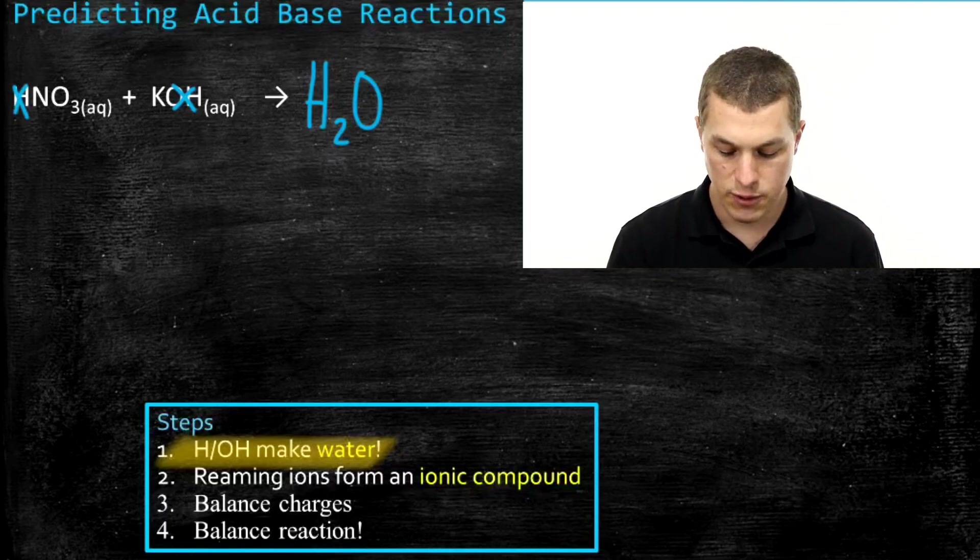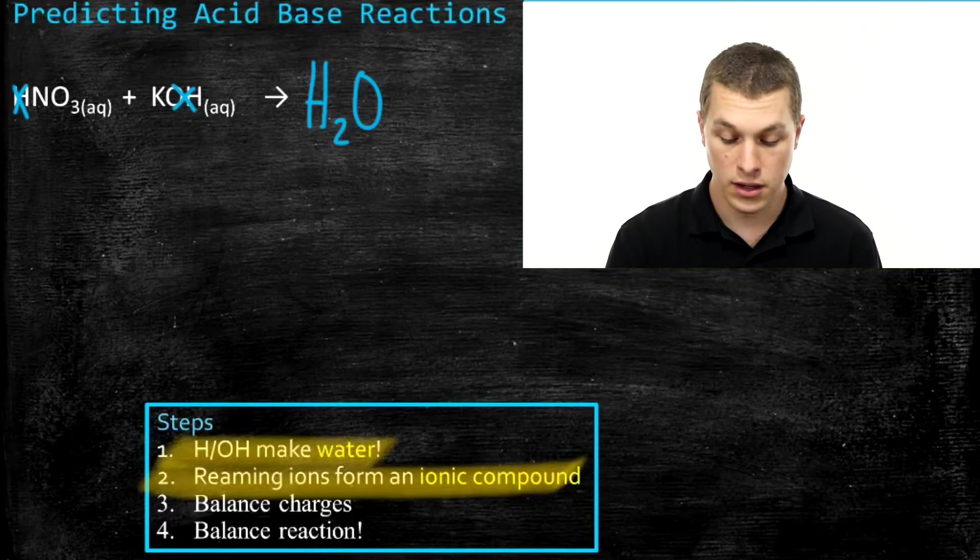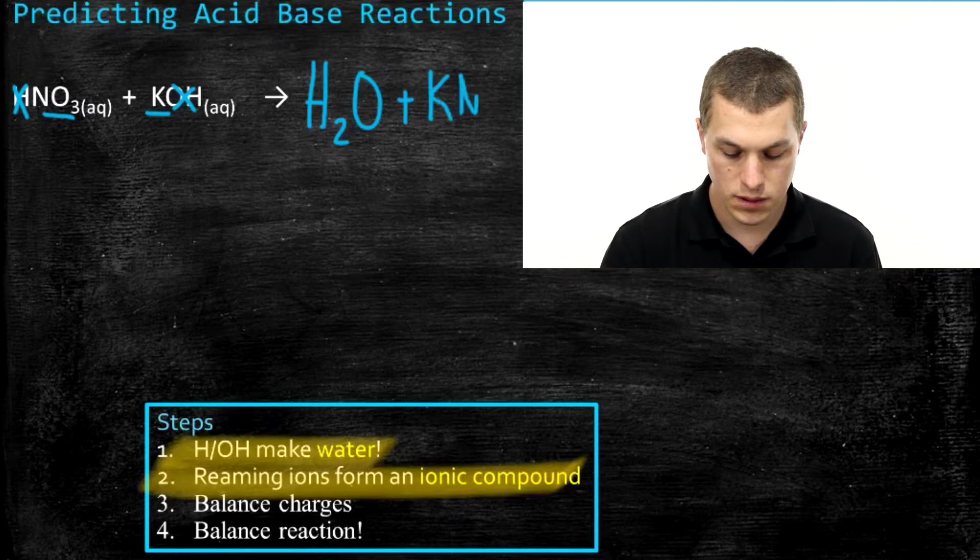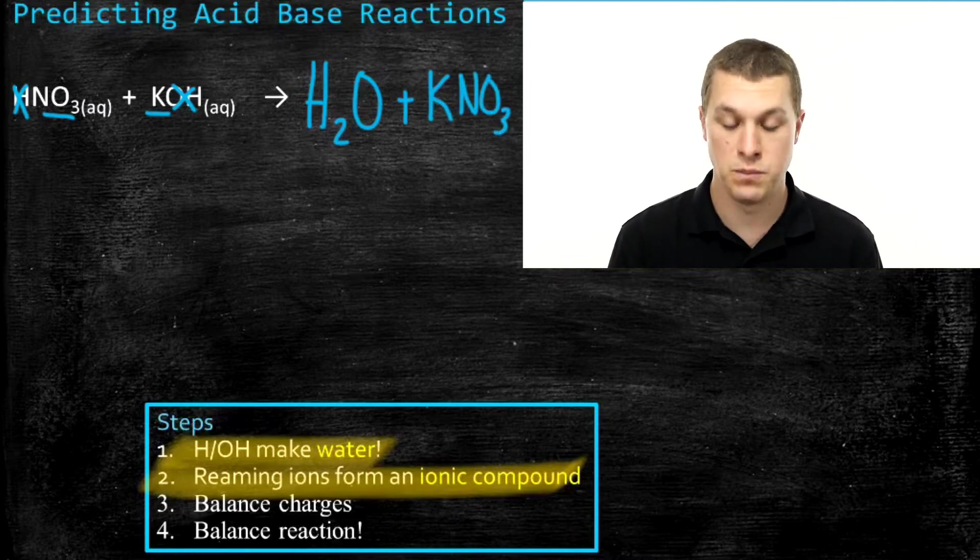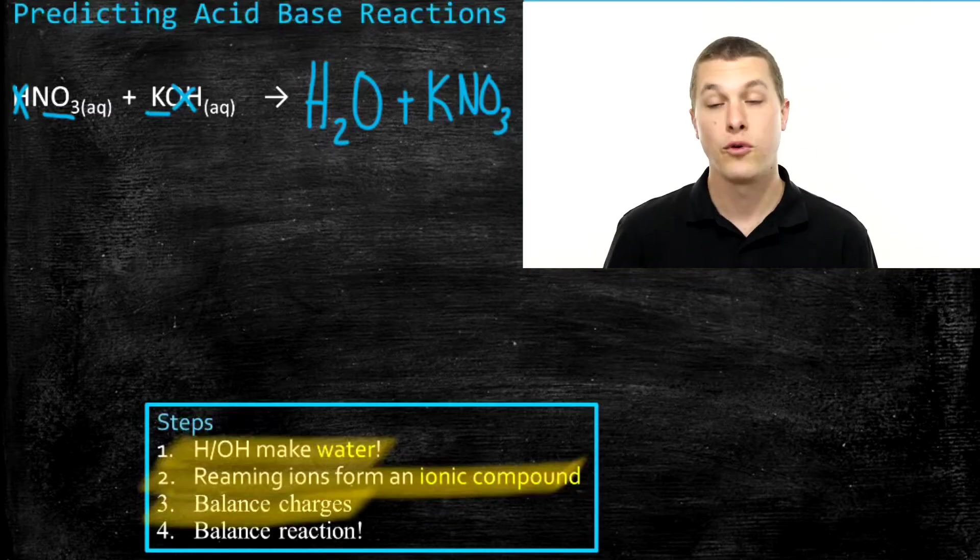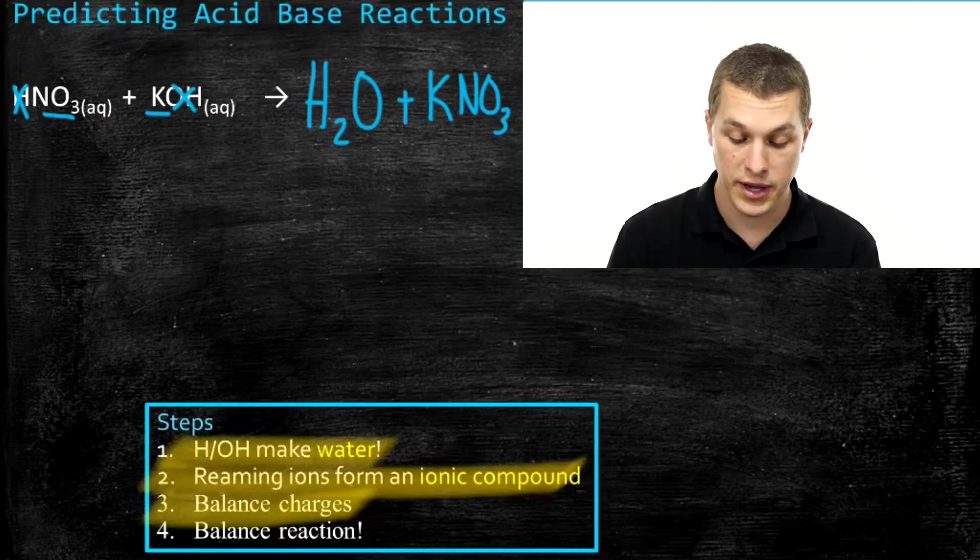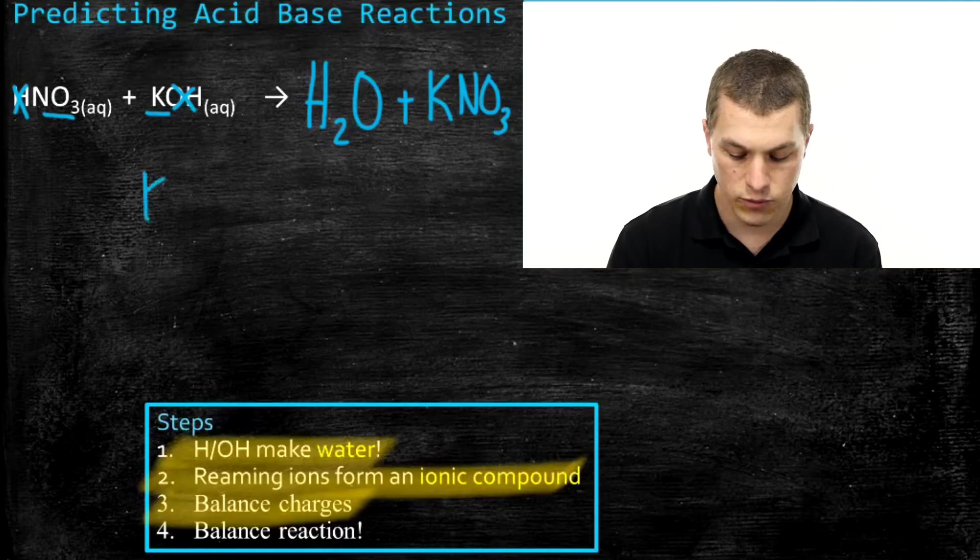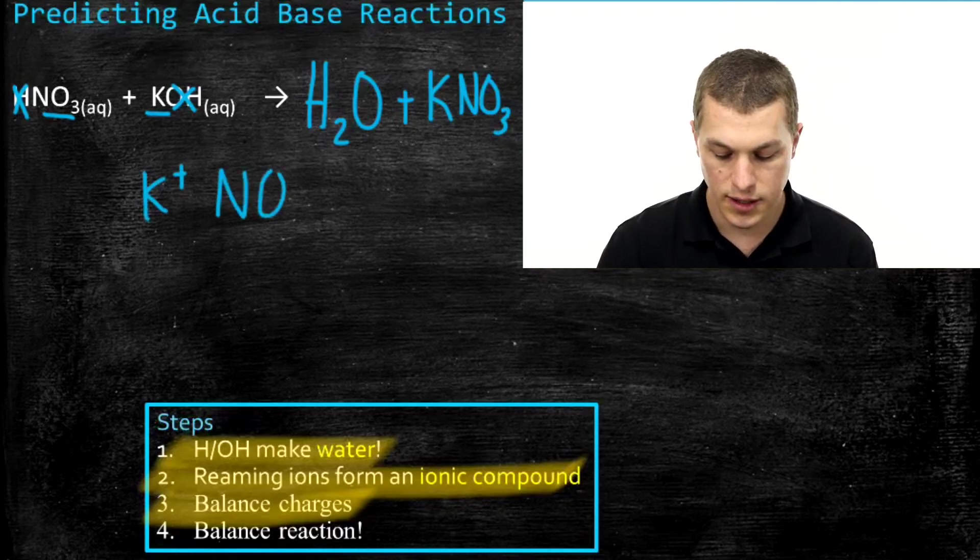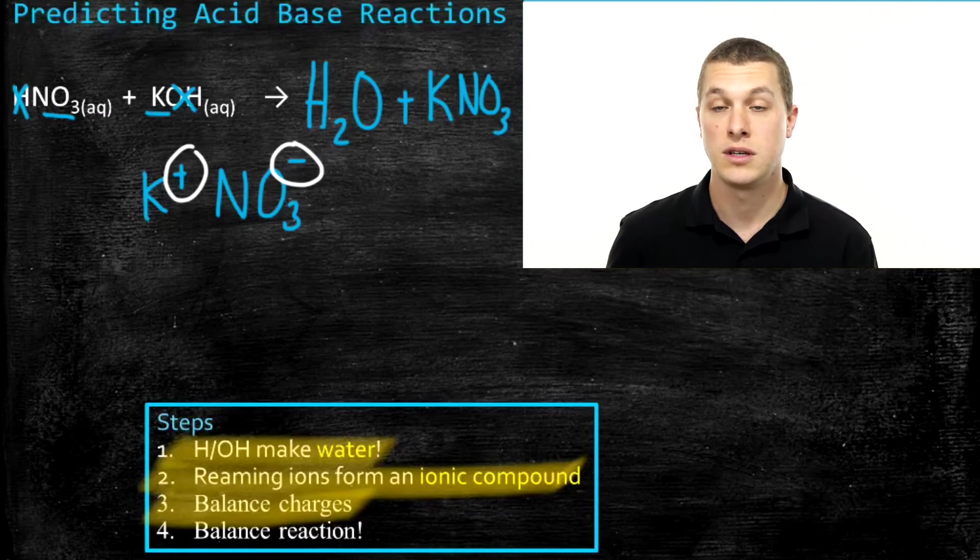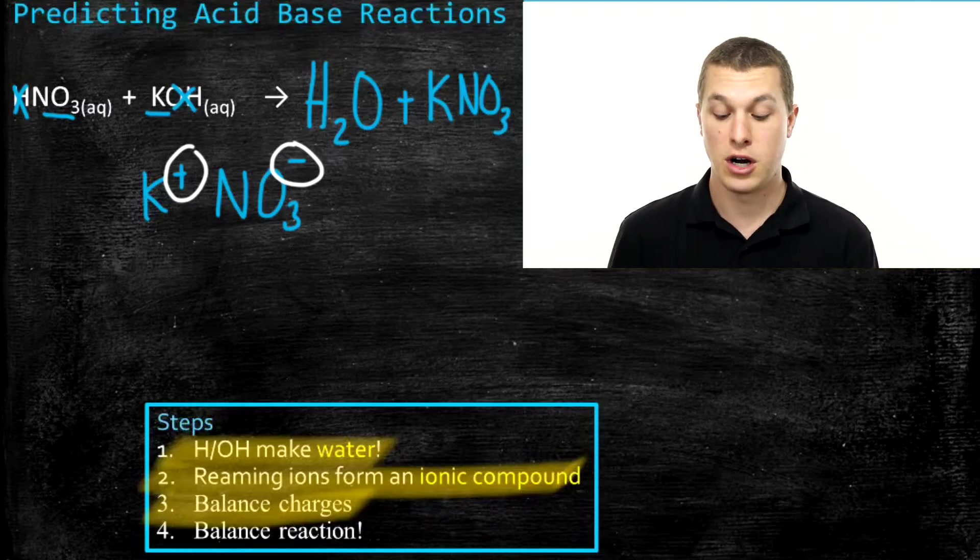Step two says the remaining ions form an ionic compound. What ions remain? Well, potassium remains, and so does nitrate. So we just get out potassium nitrate. Now, the third step says balance the charges. What does that mean? Well, when you form your ionic compound, you need to make sure that it's neutral, because ionic compounds should always be written as neutral compounds. If I take a look, potassium, we know has a plus one charge, and nitrate has a minus one charge. So those are actually already neutral. We have one potassium at plus one, and one nitrate at minus one, giving us a neutral compound. So the charges are already balanced. We can just write our ionic compound as KNO3.